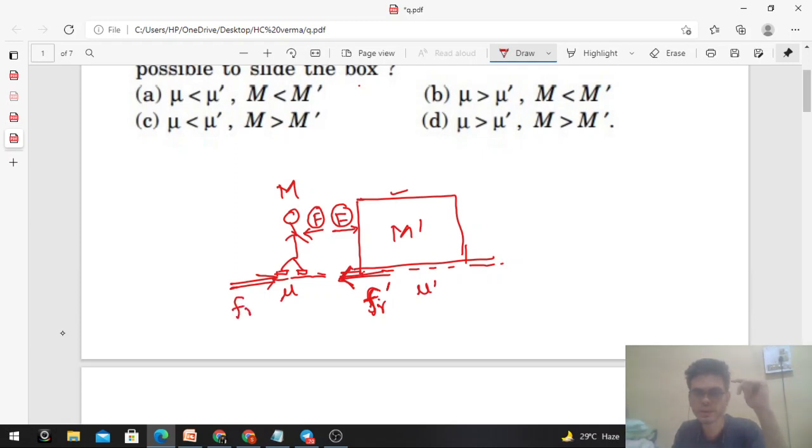What will happen? The box is being pushed. He will keep increasing the value of F. The force on the box will keep increasing until either the box starts slipping or the man himself starts slipping.